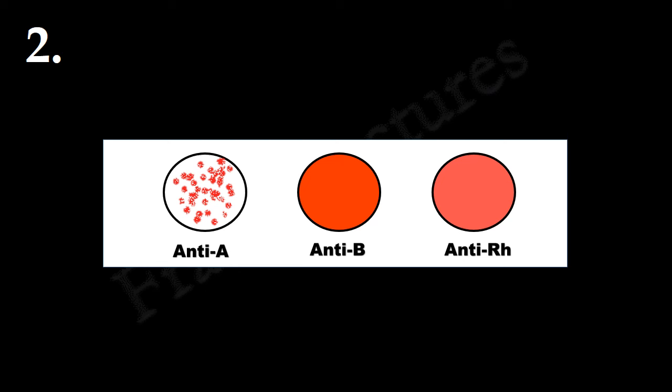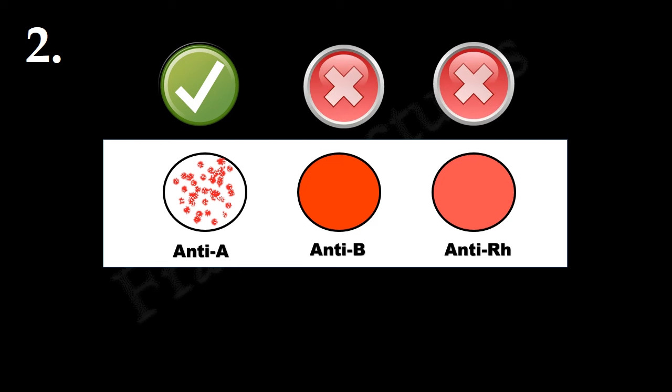Here, agglutination is observed only in the anti-A circle, which means antigen A is present on RBCs. No agglutination in the anti-B and anti-RH circles, so B antigen and RH antigen are absent. Therefore, blood group will be A negative. Recall that the minus sign indicates that RH antigen is absent.